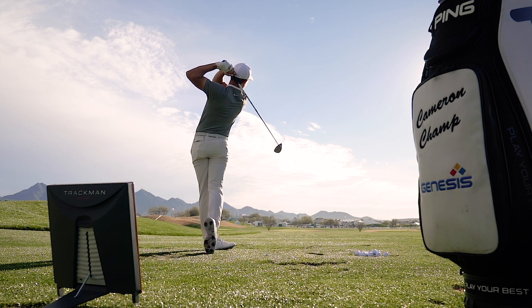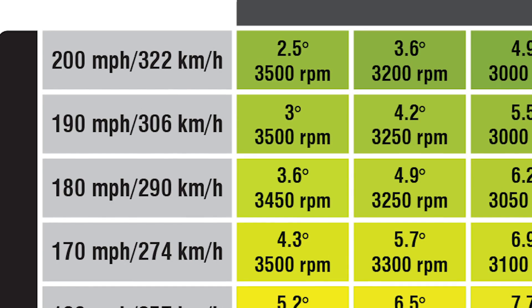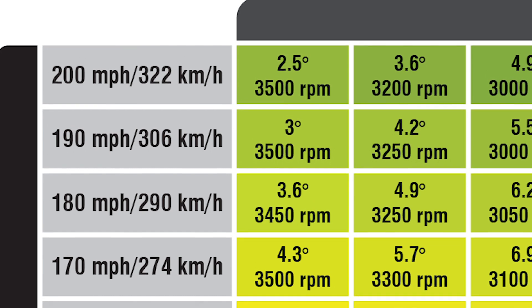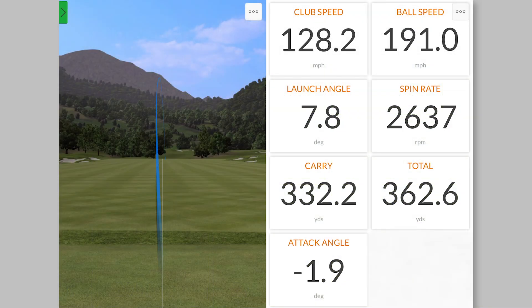At his ball speed and his attack angle, he's going to naturally create a little bit more spin and a lower launch angle. So we fit him into a window where his launch angle is between seven and a half and eight degrees, and his optimal spin is higher than what a lot of people would think.